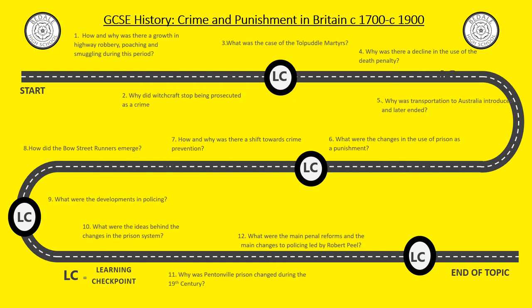Let's remind ourselves about our learning journey. We've looked at how and why there was a growth in highway robbery, poaching and smuggling. We thought about why witchcraft stopped being prosecuted as a crime. And last lesson we thought about the case of the Tolpuddle Martyrs. Today we're going to look at numbers four and five.